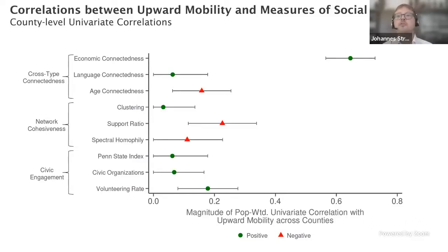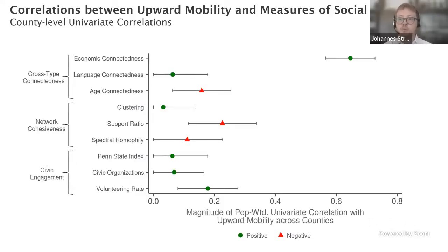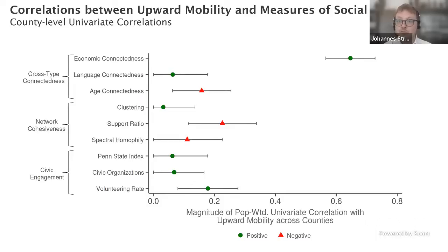There is an extremely high correlation of 0.65 and above between areas that have high economic connectedness and areas that have high upward income mobility. For the other measures of social capital we construct — cohesiveness and civic engagement — the correlations with upward income mobility are much lower. We want to point out that we don't think these other measures are less correct or less important forms of social capital. Some communities are rich in some types of social capital but poor in others, and it's important to be precise about which measure you have in mind.